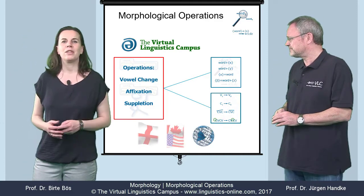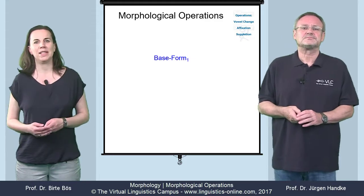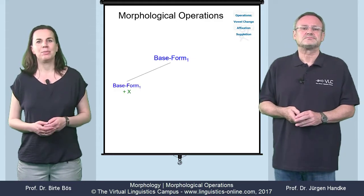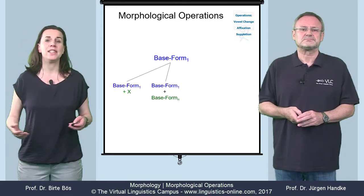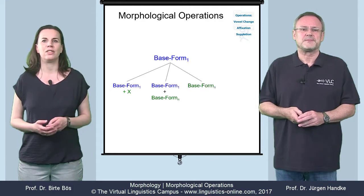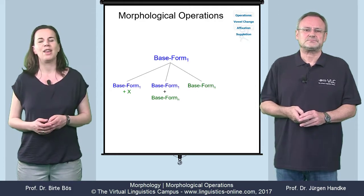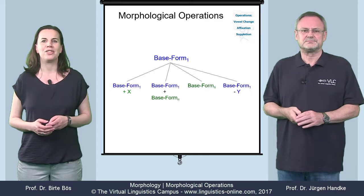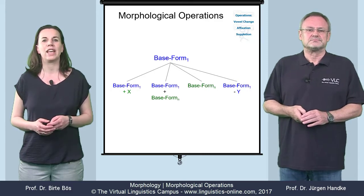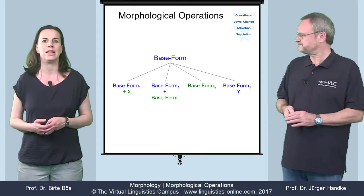Morphological operations manipulate base forms in various ways — for example, by adding items, by concatenating two or more entities, or by non-concatenative operations that somehow modify the base. Further operations range from more complicated concatenative ones to the subtraction of material from the base.